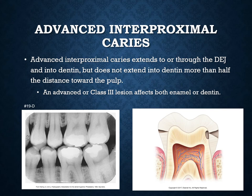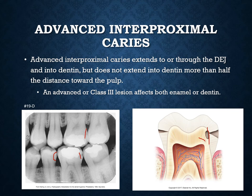Advanced interproximal caries — class three — occurs once the cavity breaks through the DEJ. Because dentin is not as dense as enamel, it advances quickly and grows fast. On one radiograph, the distal of number 19 has broken through the DEJ making it an advanced caries, while the distal of number 20 has not yet broken through and remains a class two lesion. A class three or advanced lesion affects both enamel and dentin.